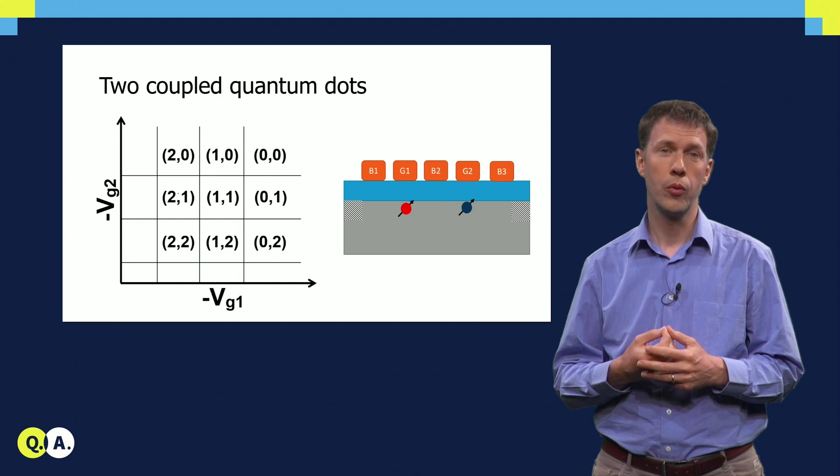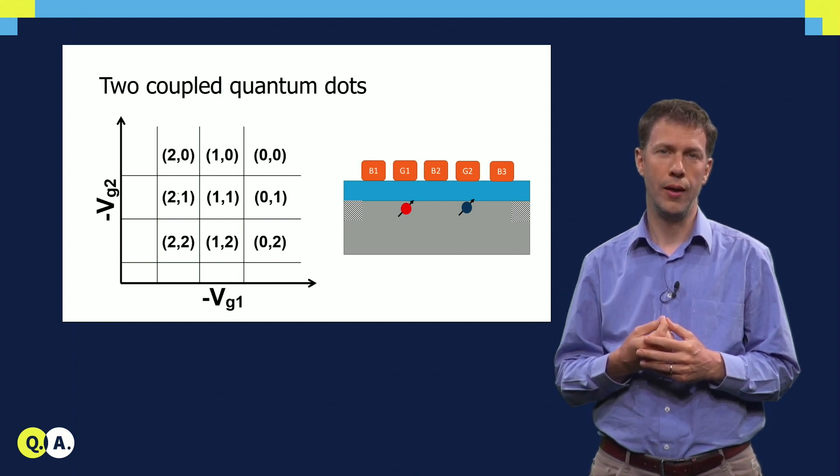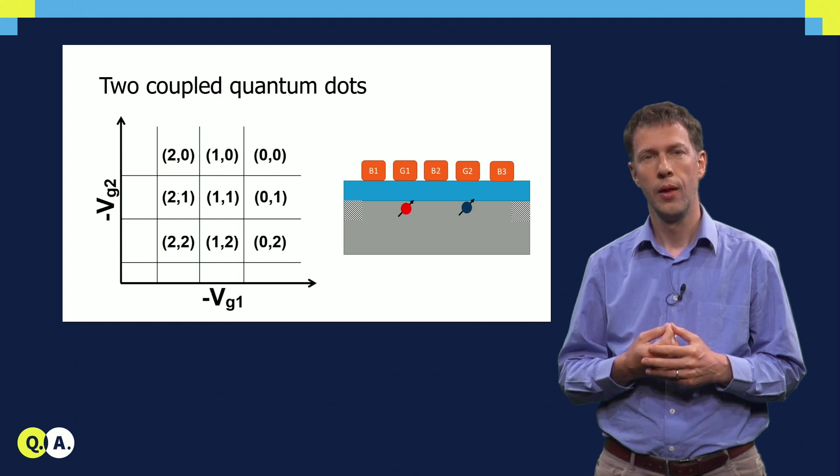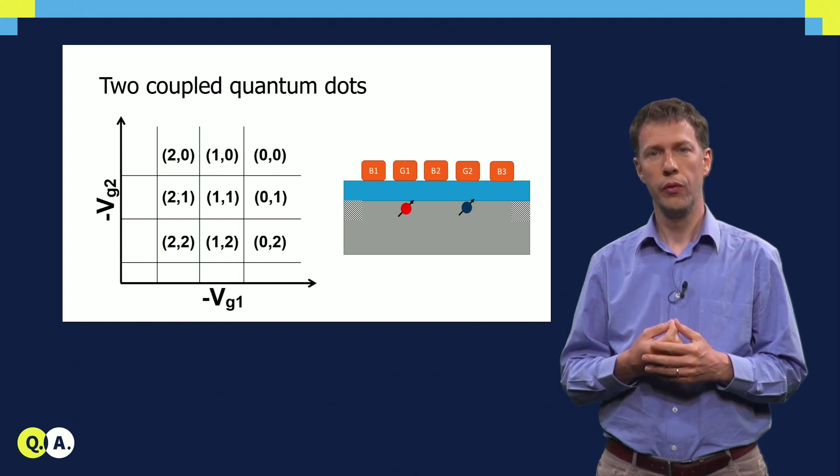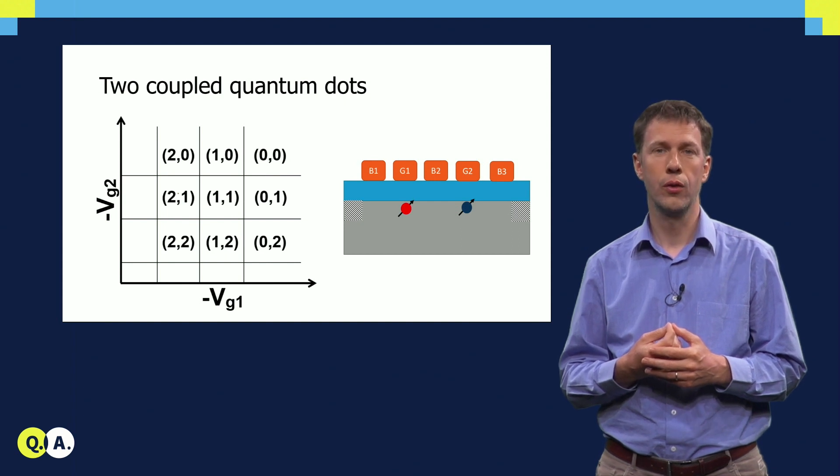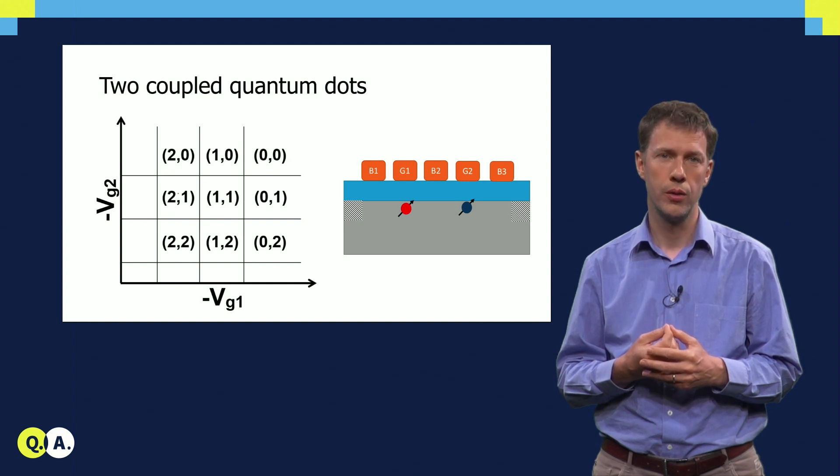then if the two quantum dots are uncoupled, for specific voltages on the first gate electrode, electrons are added to the first quantum dot. These transitions are represented by the vertical lines in the plot. And similarly, for specific voltages on the second gate electrode, electrons are added one at a time to the second quantum dot. These are the horizontal lines.